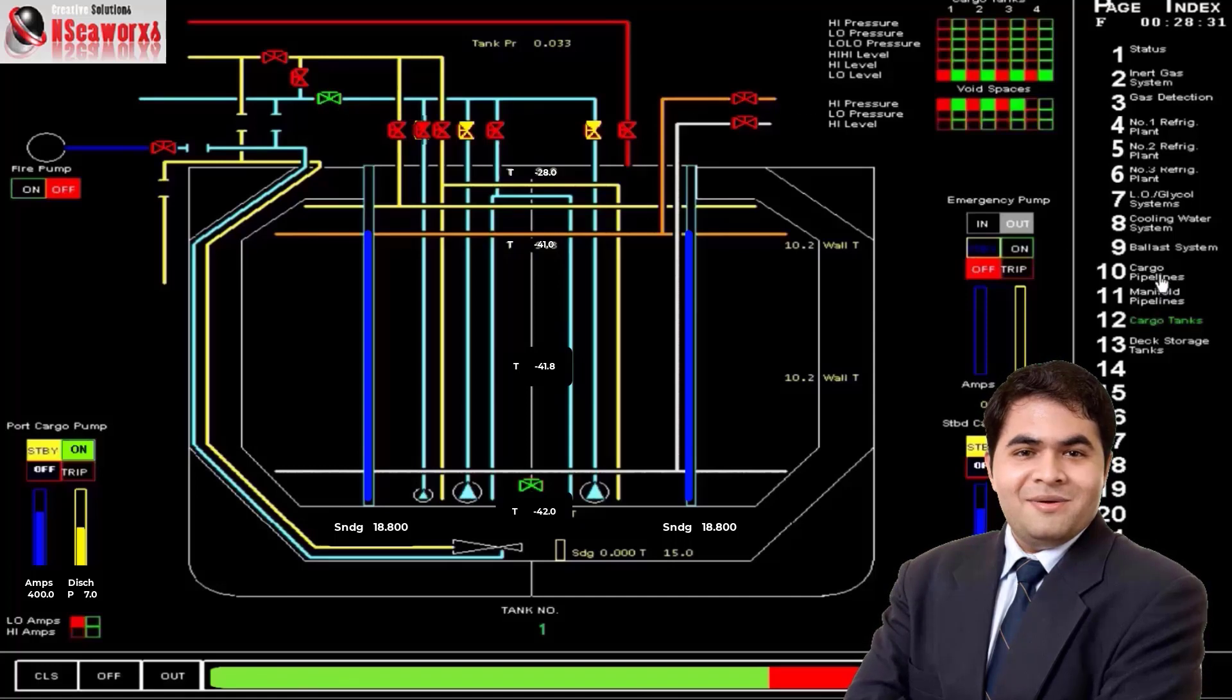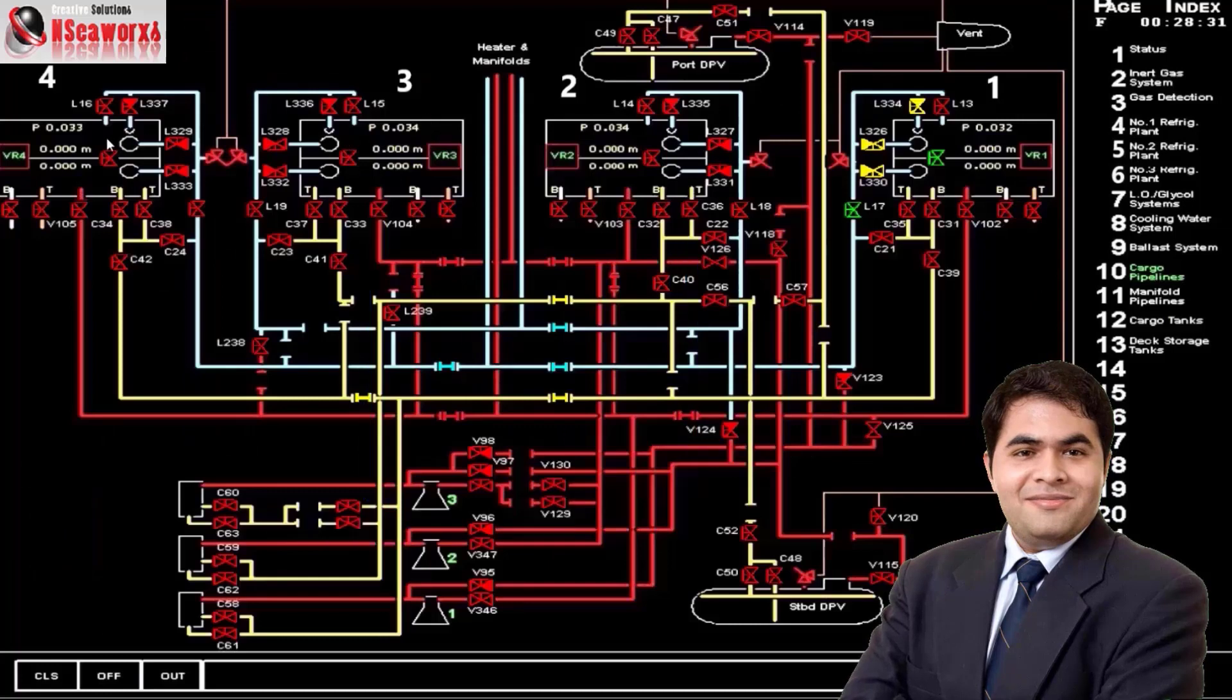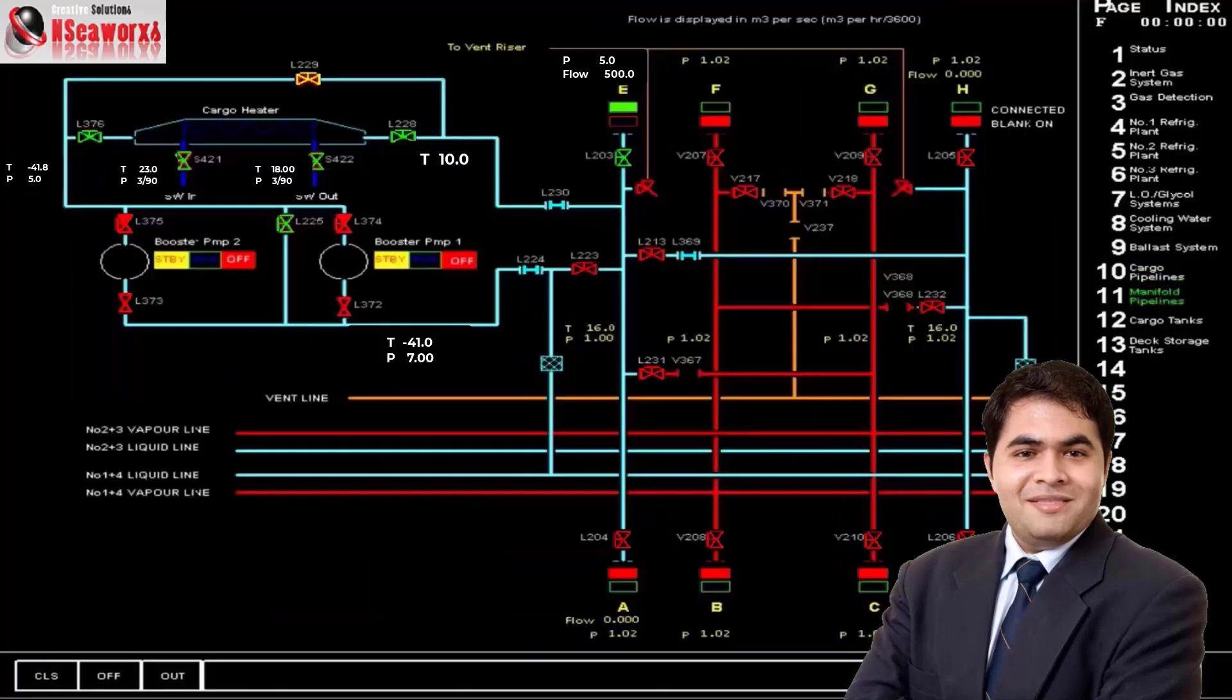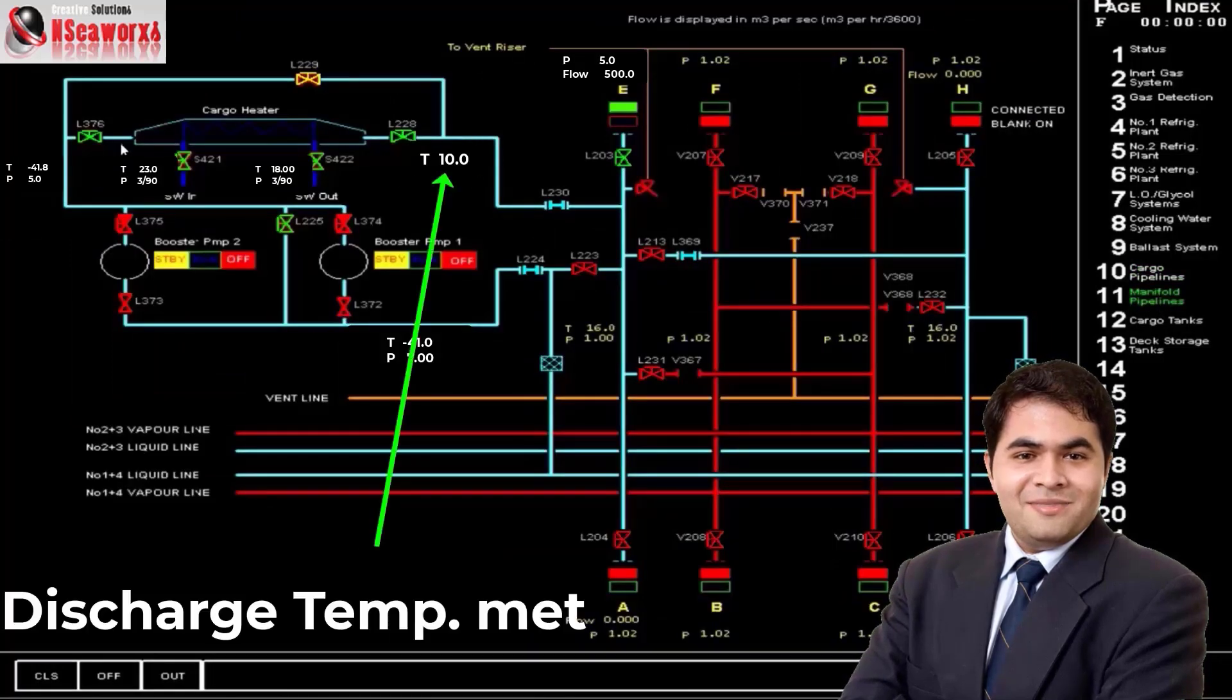This will be the same likewise with your other tanks until you are in full discharge rate mode, of course taking into account your required temperature. Every time you increase flow, this temperature will change because of the flow in the cargo heater, the heat exchanging. Warmer region goes to cold region. So, the temperature will become warmer. And there you go. You are discharging in series with the cargo heater.